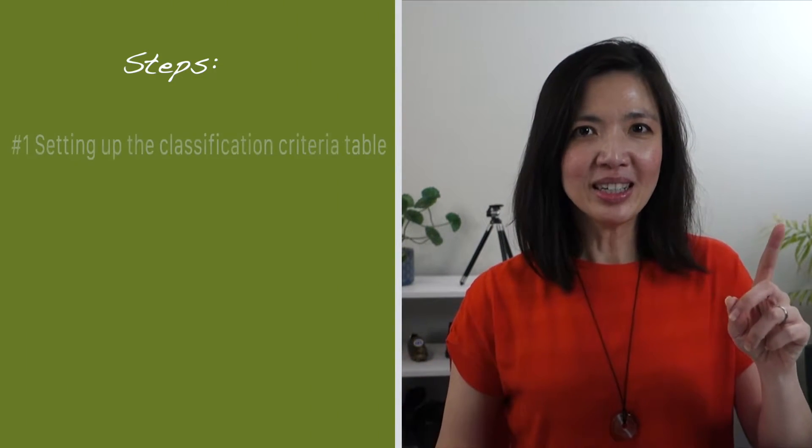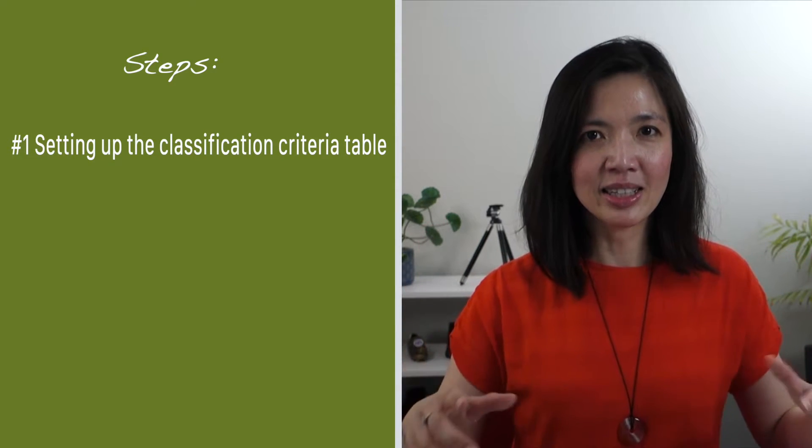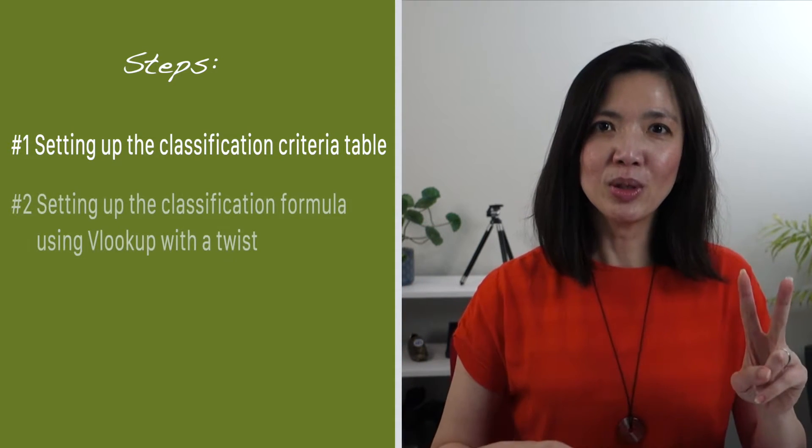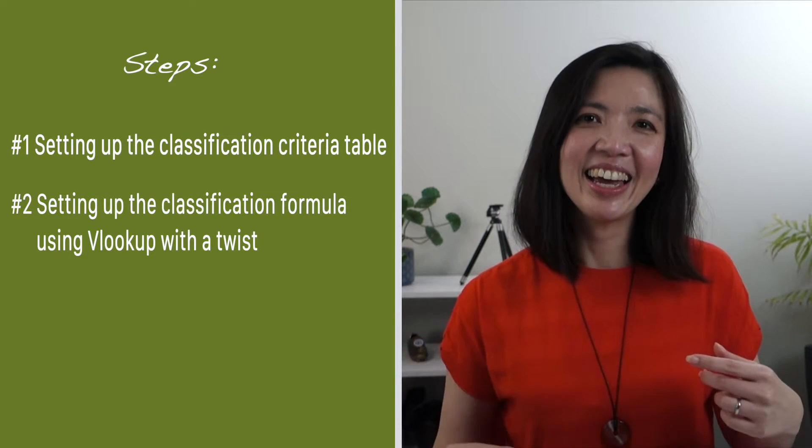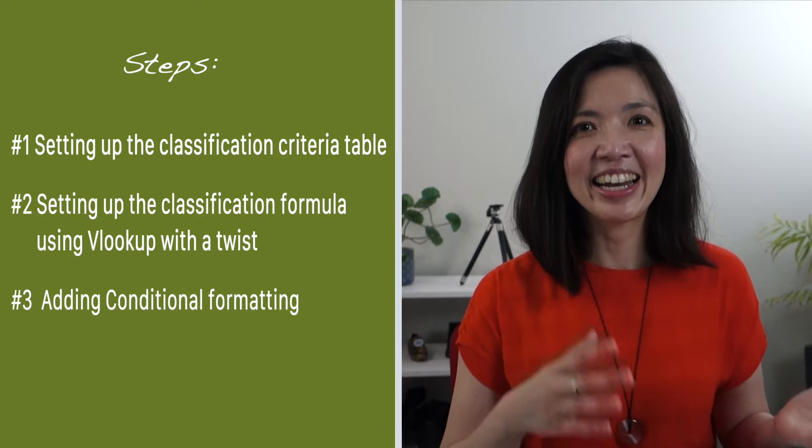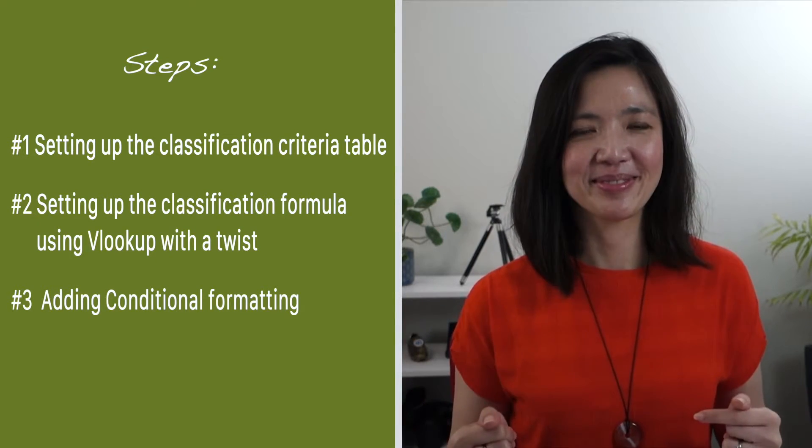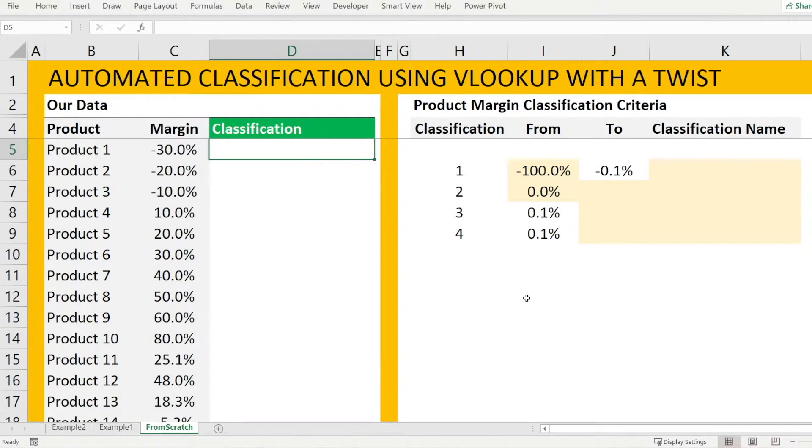In the rest of this video, I will walk you through the three steps required to create an automated classification. Step one, setting up the classification criteria table. Step two, setting up the classification formula using VLOOKUP with a twist. And thirdly, adding conditional formatting. All right, let's do this from scratch together.